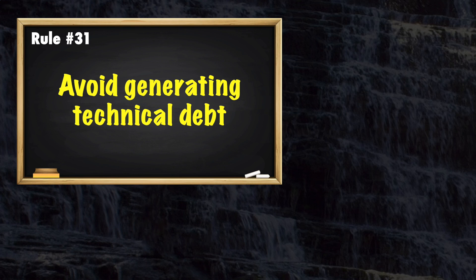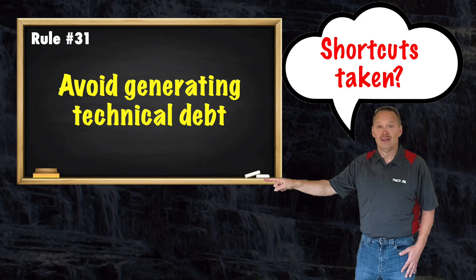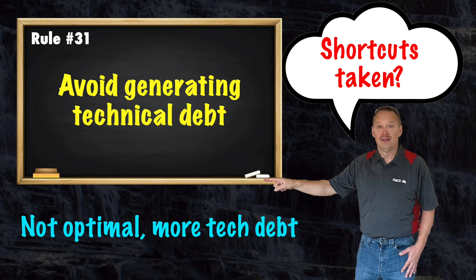Rule 31: if any shortcuts were taken with the code and Coach Joe rules, then the code is less optimal, which means more technical debt.